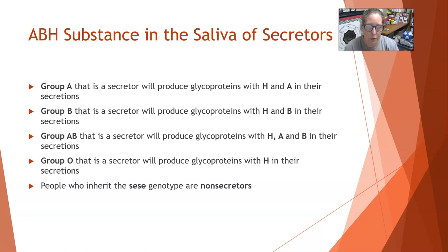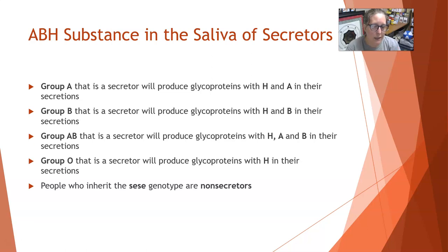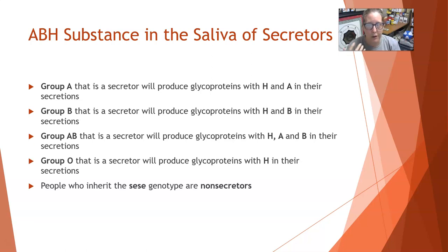People who are non-secretors, who have the little se/little se genotype, would not have any of the soluble substances in their saliva. So even if they're group A, there would be nothing in the saliva. If they're AB or O, you would not find H, A, or B in their secretions.